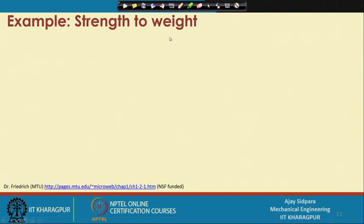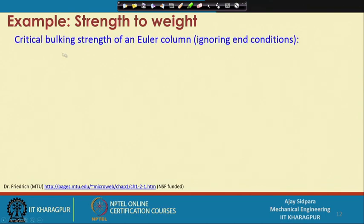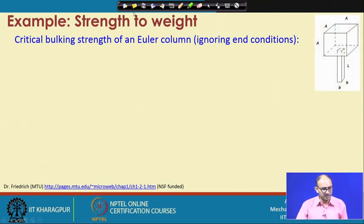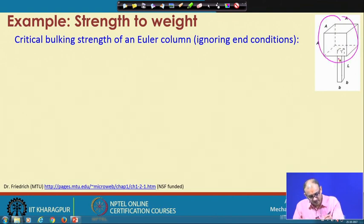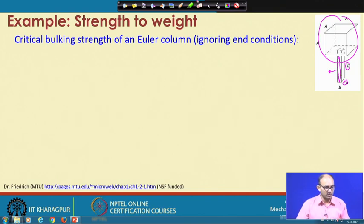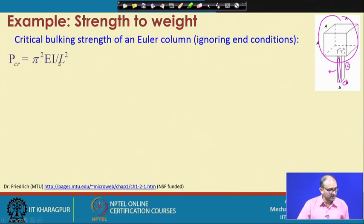Now coming to the strength-to-weight ratio. This is also important. Consider the critical buckling strength of a regular column, ignoring end conditions. In this example, a weight is loaded on top of a particular column. The column has a square cross-section B×B and a length L. The critical buckling strength is given by π²EI divided by L².